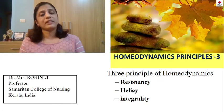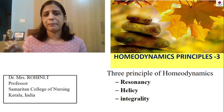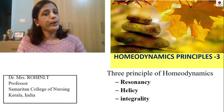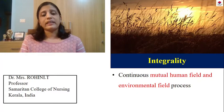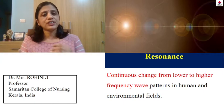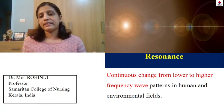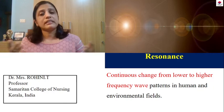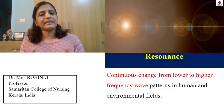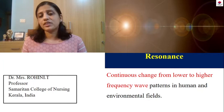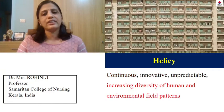Then we come to 3 square. The first three stands for the principles of homeodynamics. Whenever you write an answer, you should write that there are three principles of homeodynamics: resonancy, helicy, and integrality. Resonancy means there is always a change of energy field — from low to high and high to low. The best example is hormonal changes in a woman, progesterone and estrogen fluctuations, the sleep-wake cycle, and temperature changes from dawn to dusk. All these indicate our energy field follows a principle of resonancy: fluctuations from low to high and back.